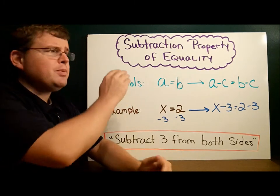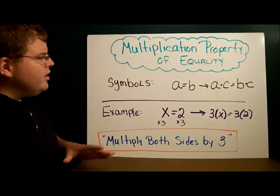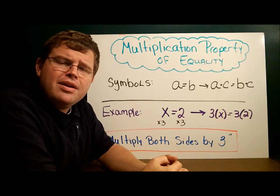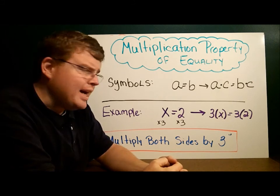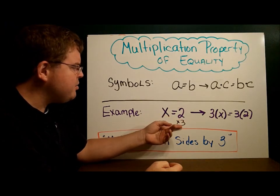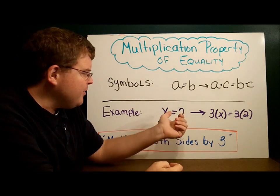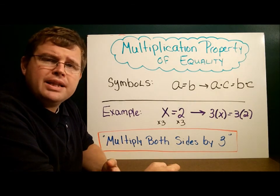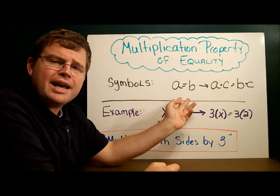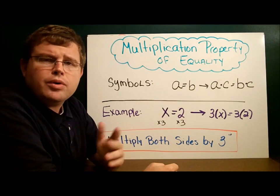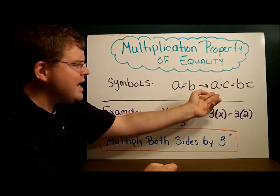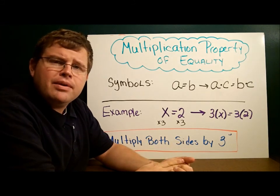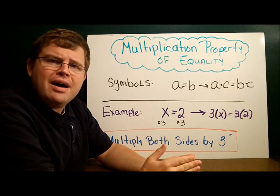The third property is the multiplication property of equality. If you multiply both sides of an equation by the same amount, they're still equal. If x equals two and I multiply both sides by three, I have 3x equals six — and indeed, if x equals two, 3x does equal six. In symbolic notation, if a equals b, then a times c equals b times c.